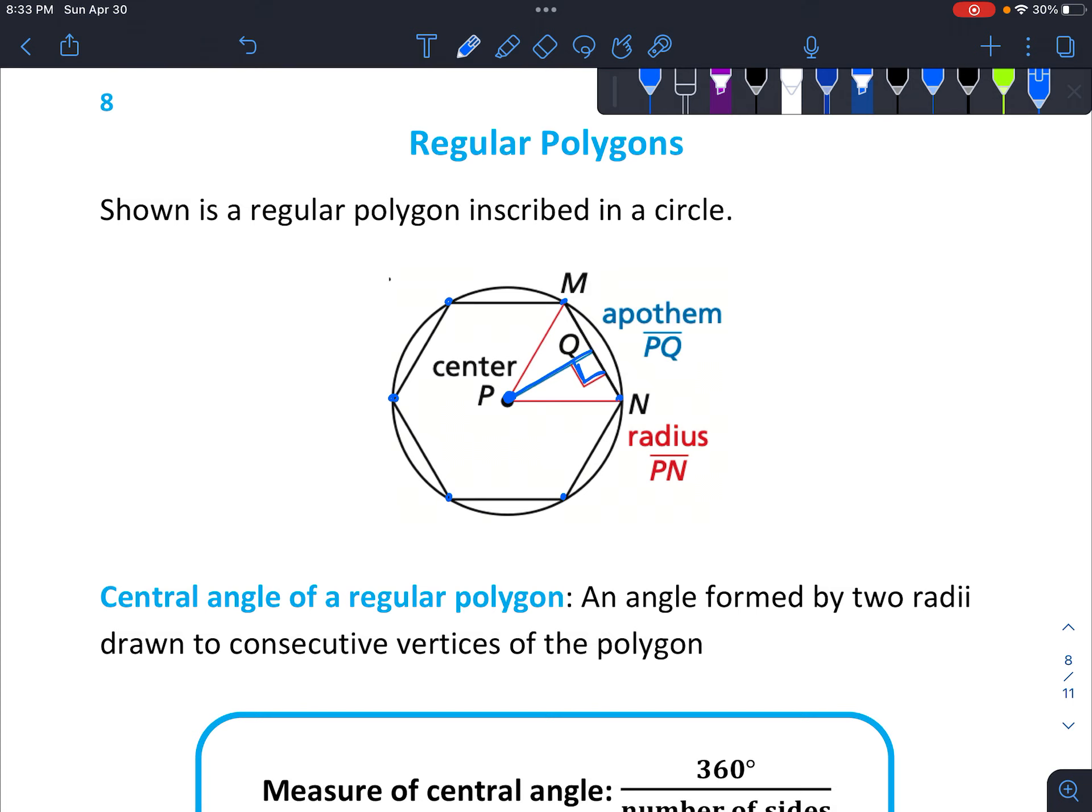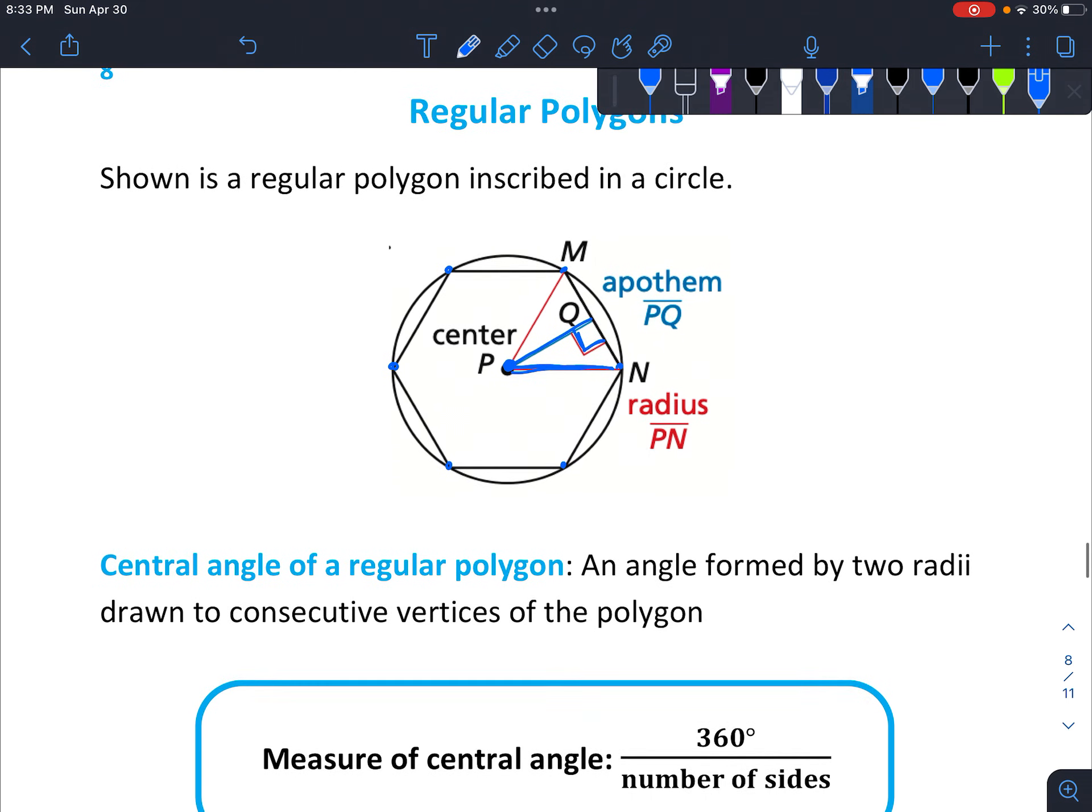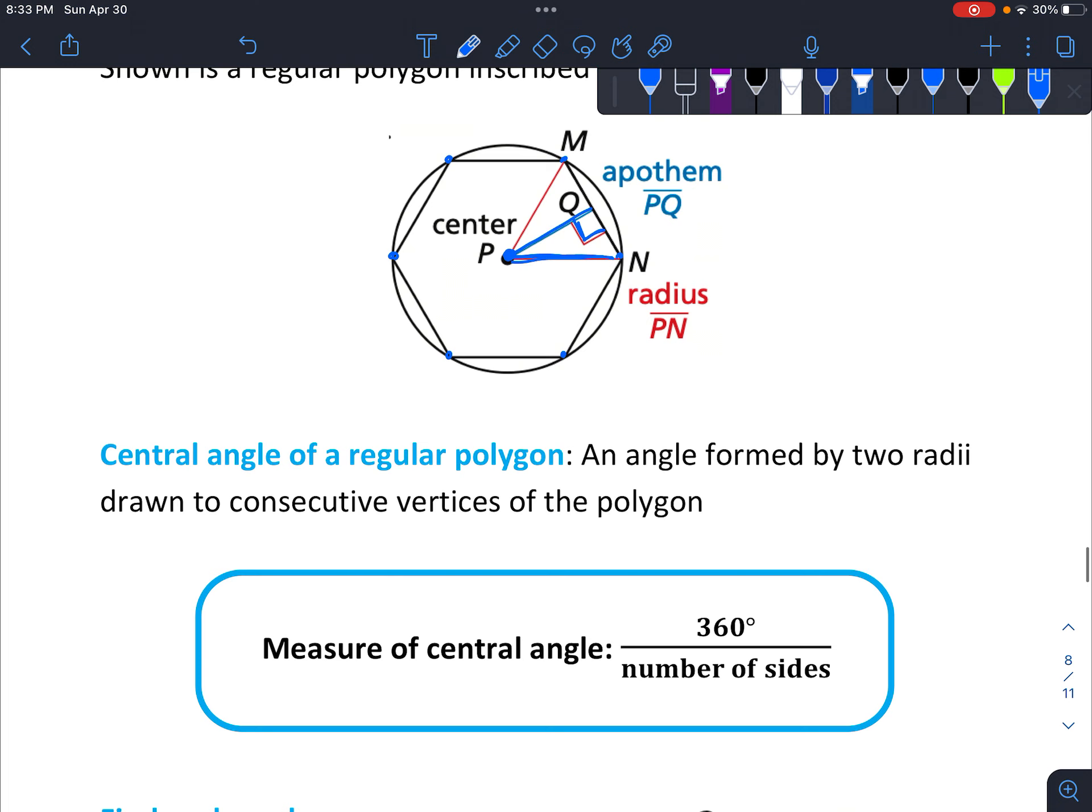And then we still have a radius, which we know what that is, the radius PN right here. For this time, basically I want you to think about two of those radii. So these two highlighted in blue, take off the other.